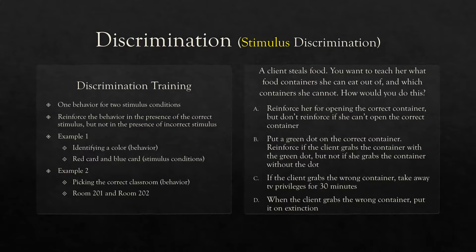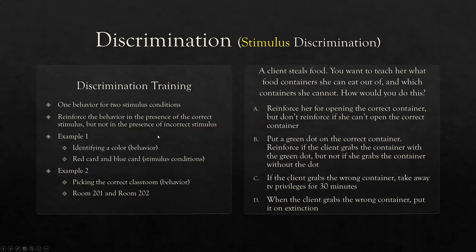Example two: picking the correct classroom. On a campus you need to identify the correct room — room 201 versus 202. You have to discriminate between 201 and 202. I might reinforce you for going into 201 but not 202. Notice we're dealing with a single response but multiple stimuli — we're just trying to tell the difference between stimuli and engage in the response in the presence of the correct one. It all comes down to differential reinforcement.